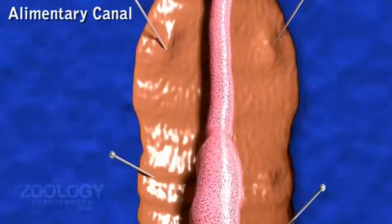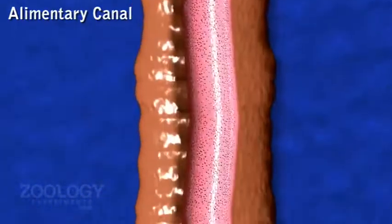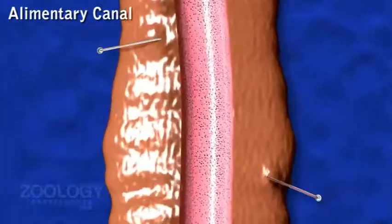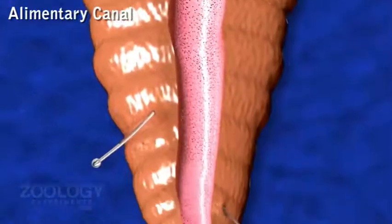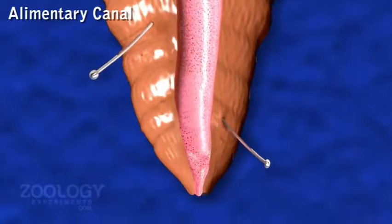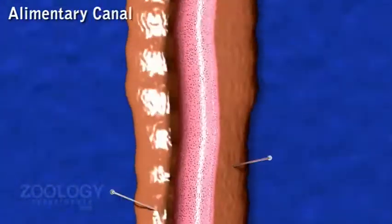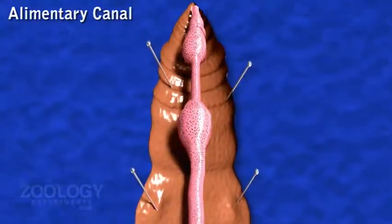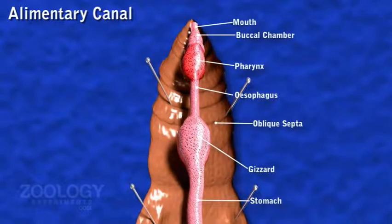Pheretima posthuma has a complete and straight alimentary canal running along the entire length of body. Mouth and anus constitute its anterior and posterior openings respectively. It is functionally regionated into various parts which are buccal chamber, pharynx, esophagus, gizzard, stomach and intestine.